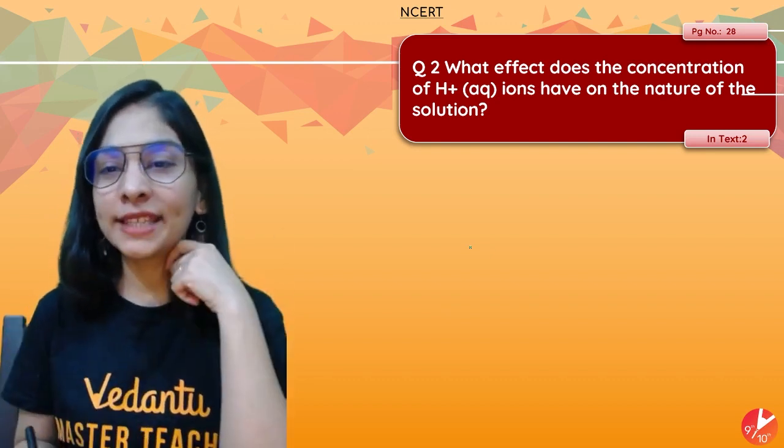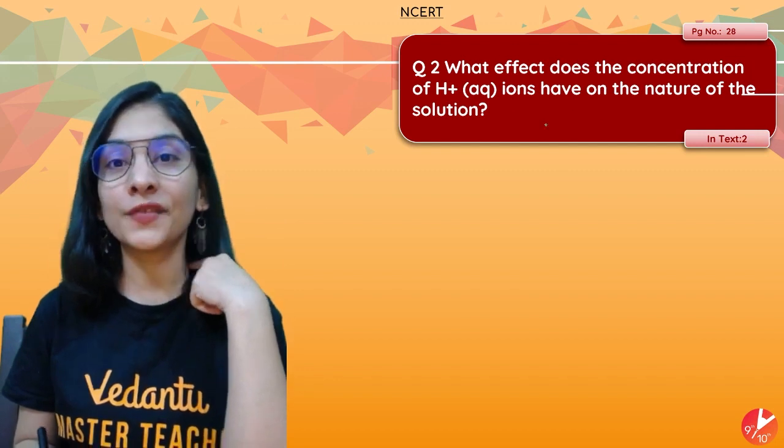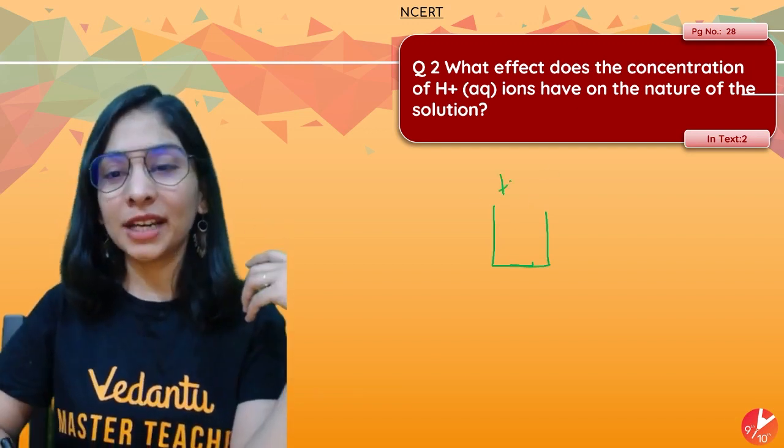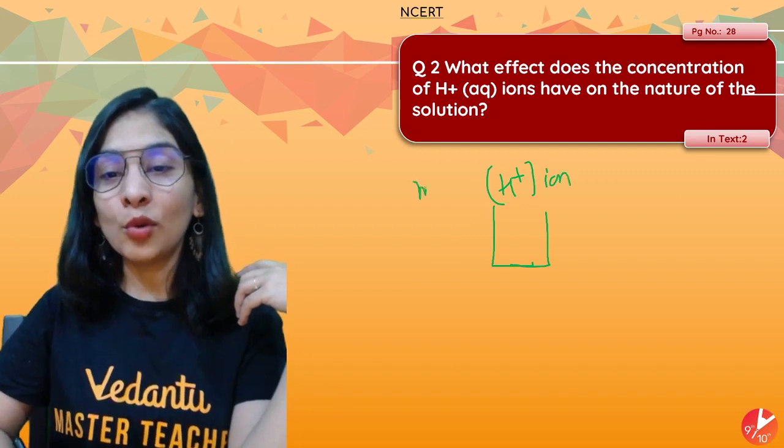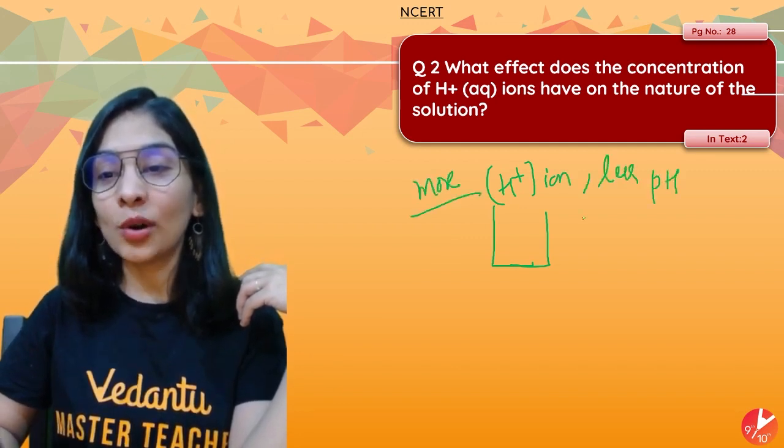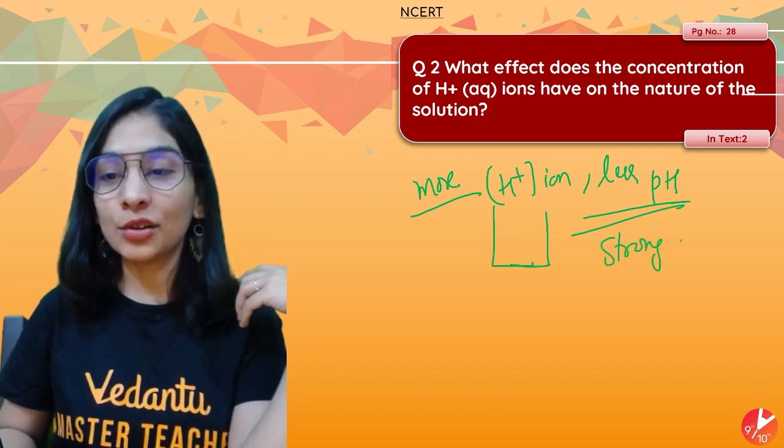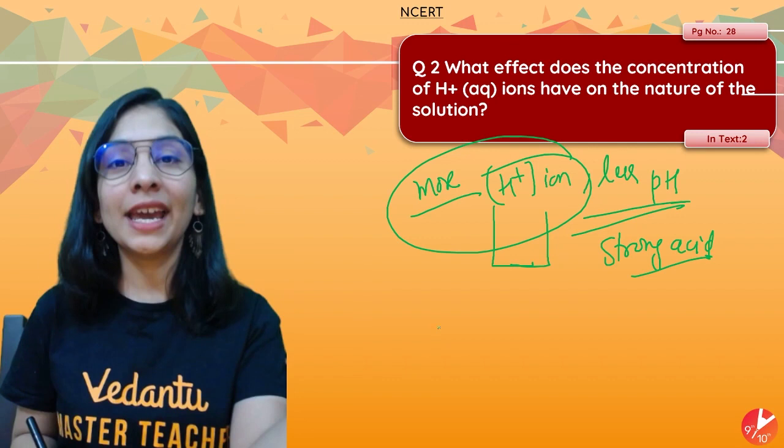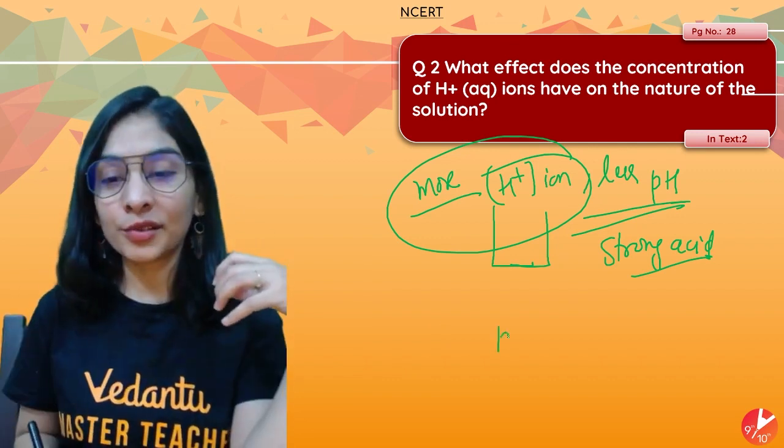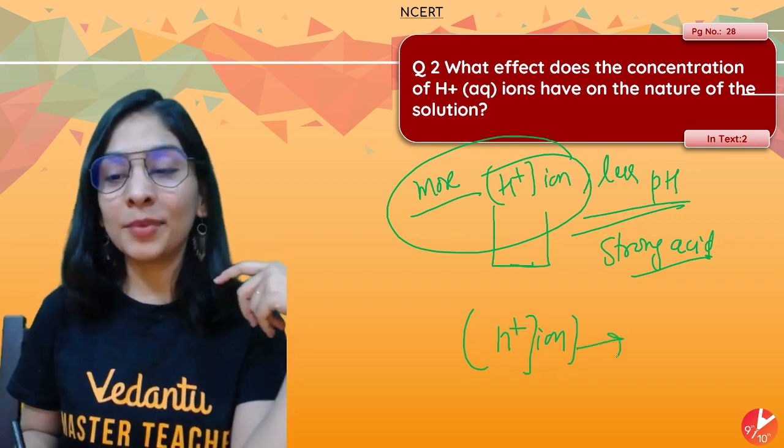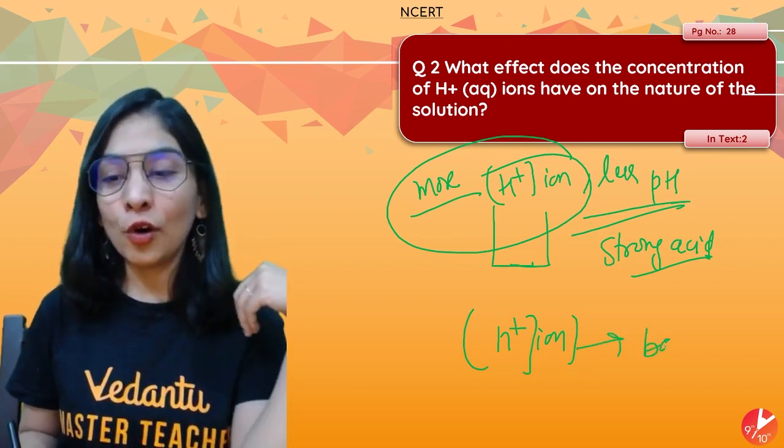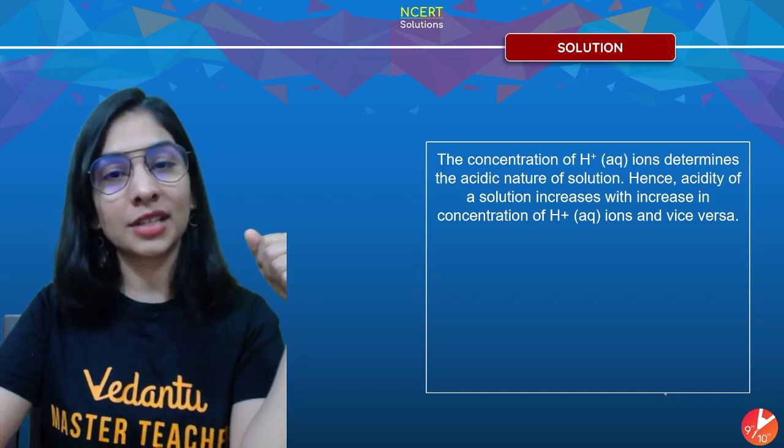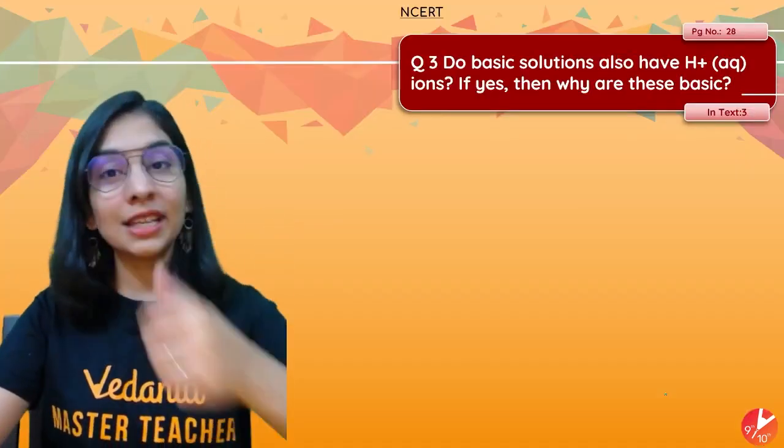Question number two is somewhat related to the same. What effect does the concentration of hydronium ion have on the nature of solution? Students, I think I've explained this. More and more hydronium ions means less and less pH and the solution will be a strong acid. More and more concentration of hydrogen ions means less and less pH and it will be a strong acid, and vice versa. The fewer hydrogen ions it has, the weaker acid it will be, or it will go to the basic side and carry basic property. From hydrogen ion presence, I can tell about the nature of a given substance.